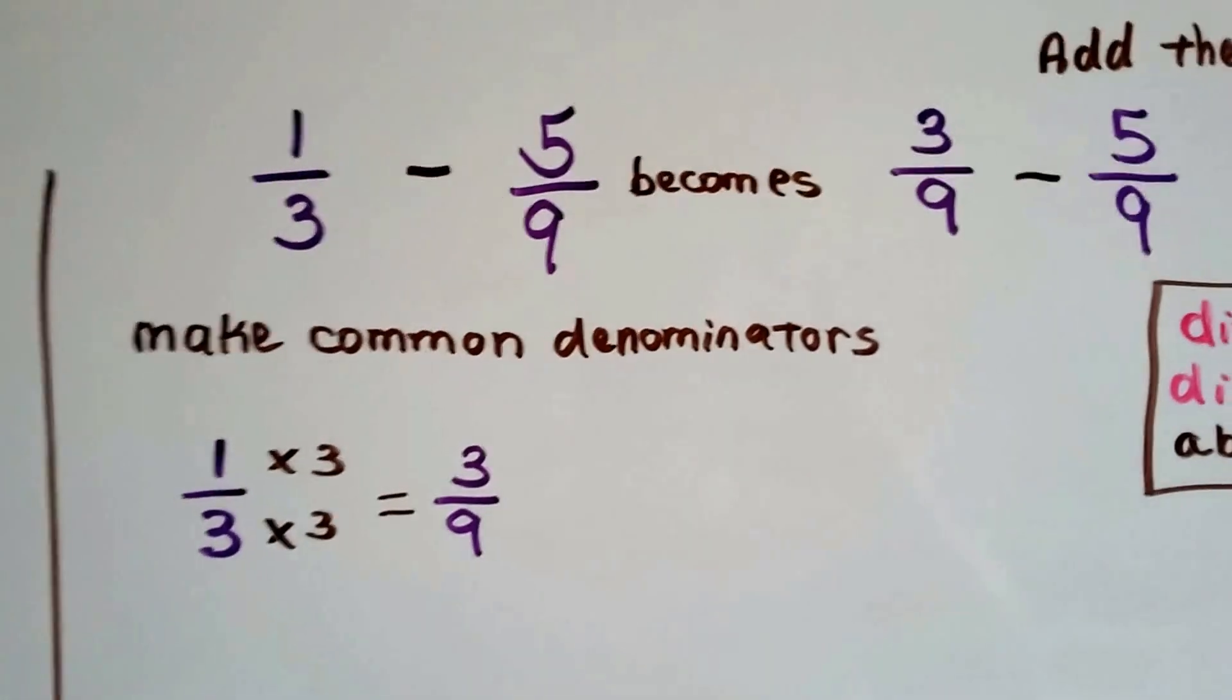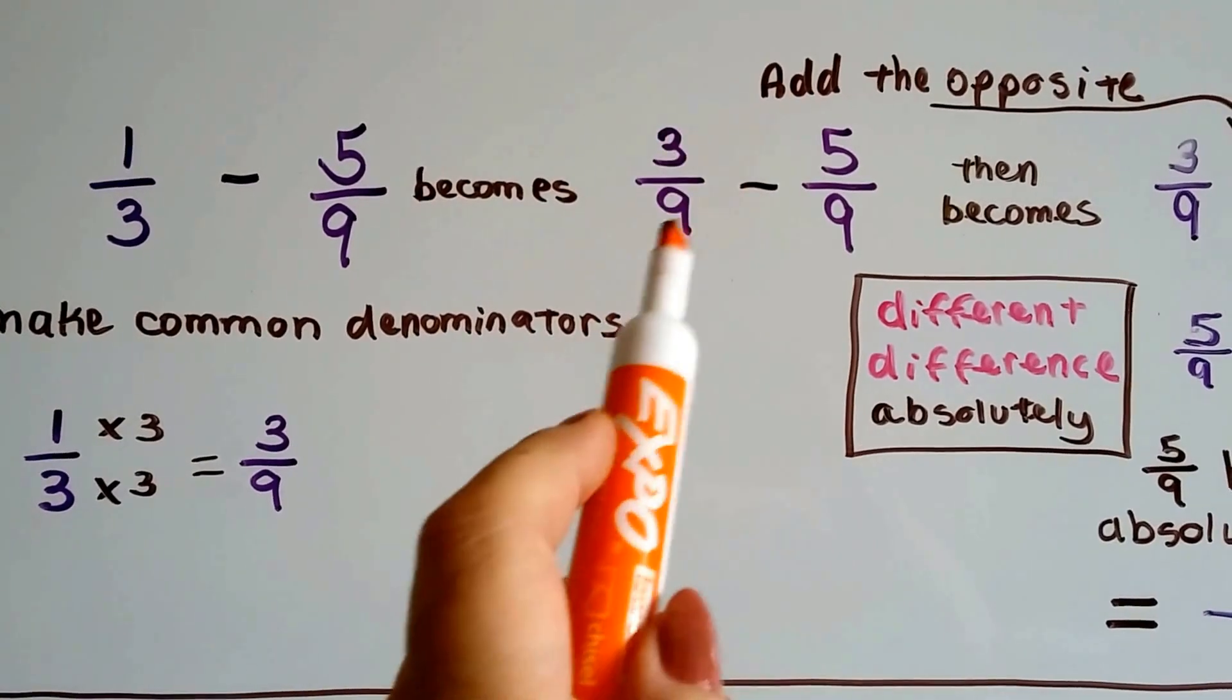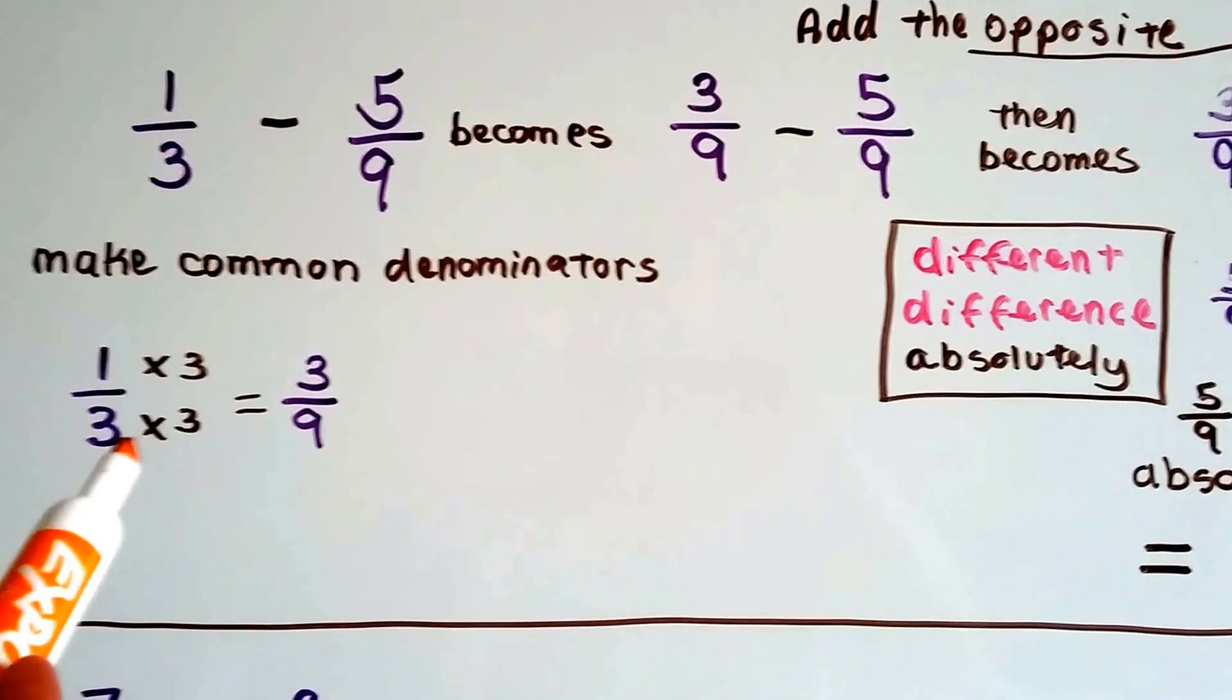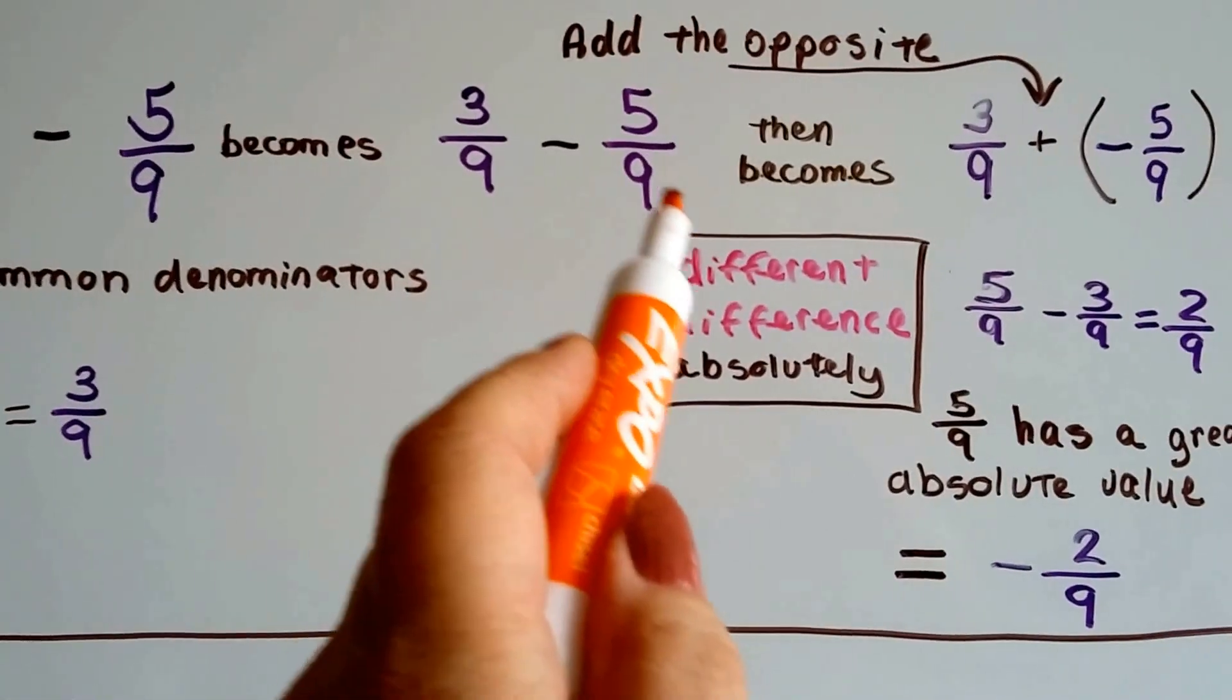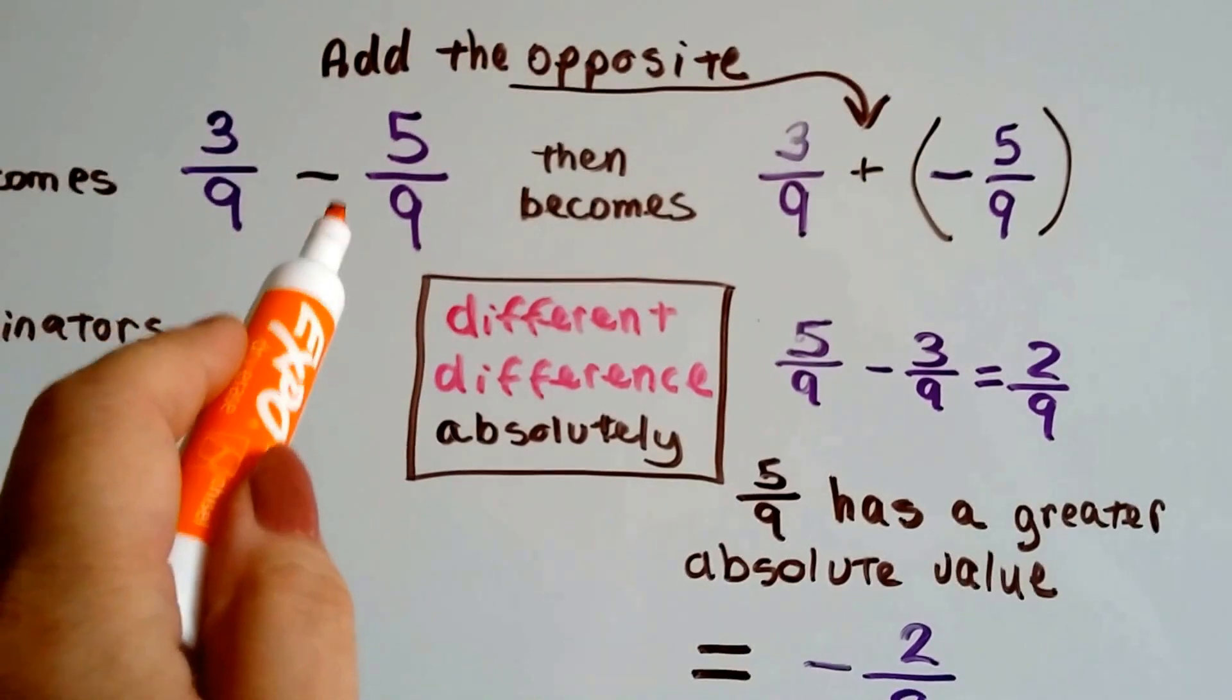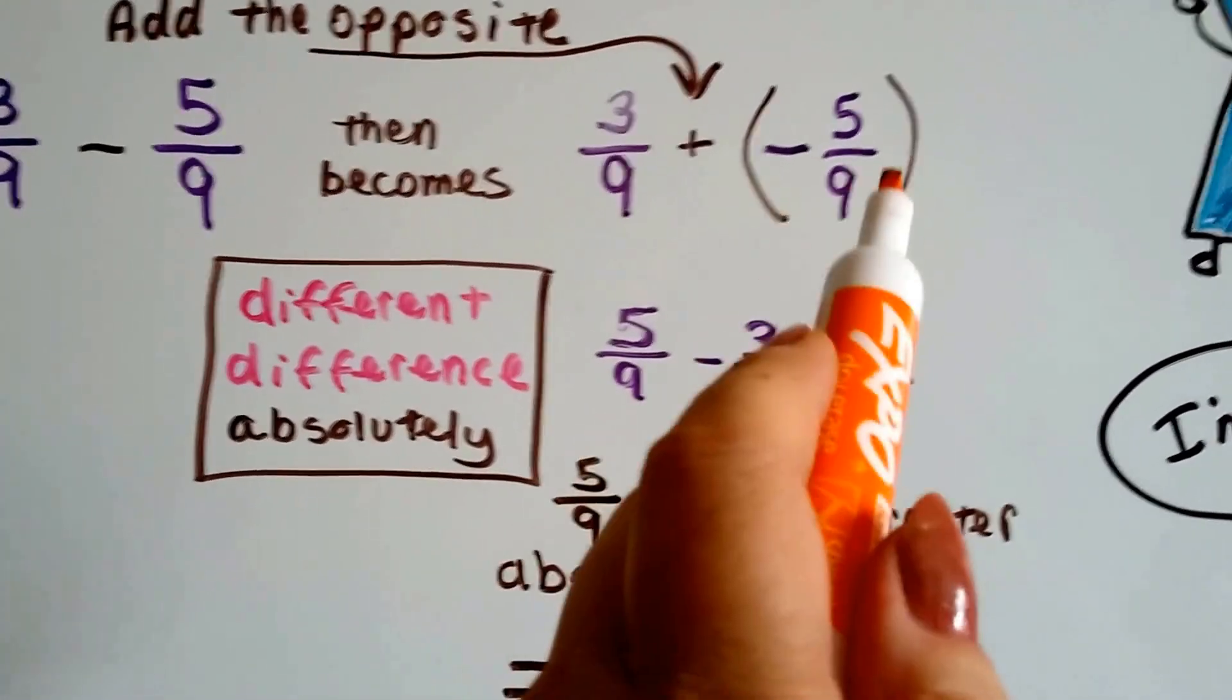If we have 1 third minus 5 ninths, we need to add the opposite. So this is going to become 3 ninths because we need to make common denominators. So the 1 third to get to the 9 to match the 5 ninths is going to have to be multiplied by 3 in the numerator and denominator. It becomes 3 ninths. So now we have 3 ninths minus 5 ninths. We can see that the 3 ninths is smaller and it's going to push us into the negative, but we add the opposite. So this minus sign turns into a plus sign and this positive 5 ninths turns into a negative 5 ninths. Now we've got 3 ninths plus negative 5 ninths.